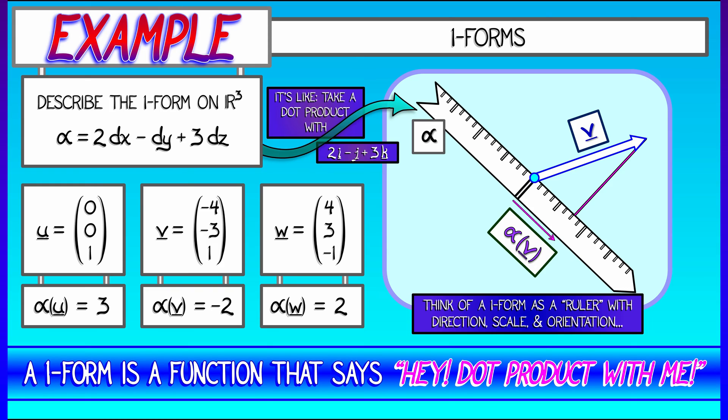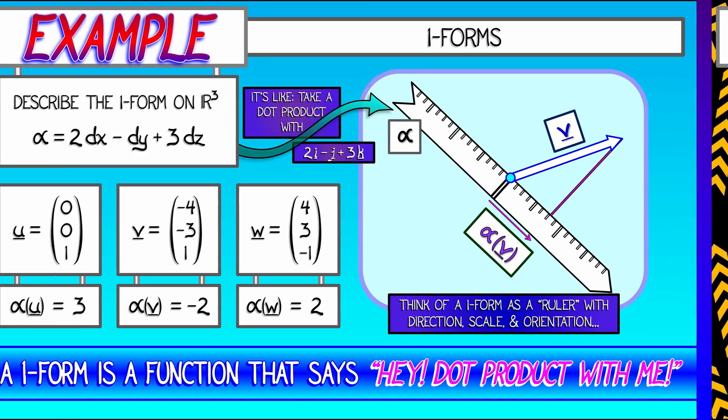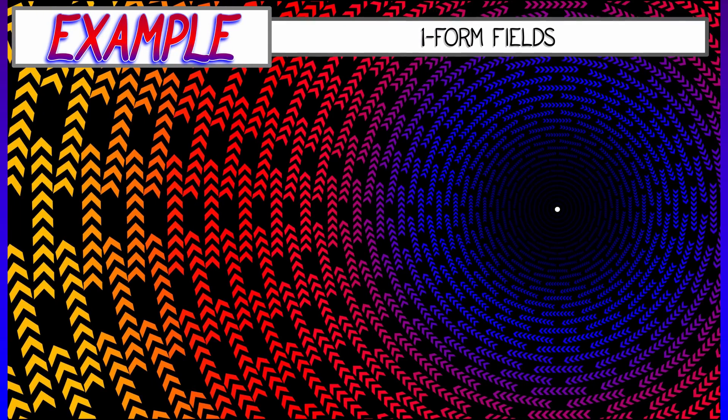In general, it's difficult to visualize these algebraic one-forms, but thinking in terms of rulers is maybe not so bad of a way to go. And in particular, it helps us with understanding one-form fields.